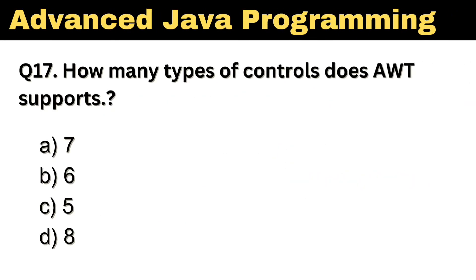Question number 17. How many types of controls does AWT support? The right answer is option A: 7.